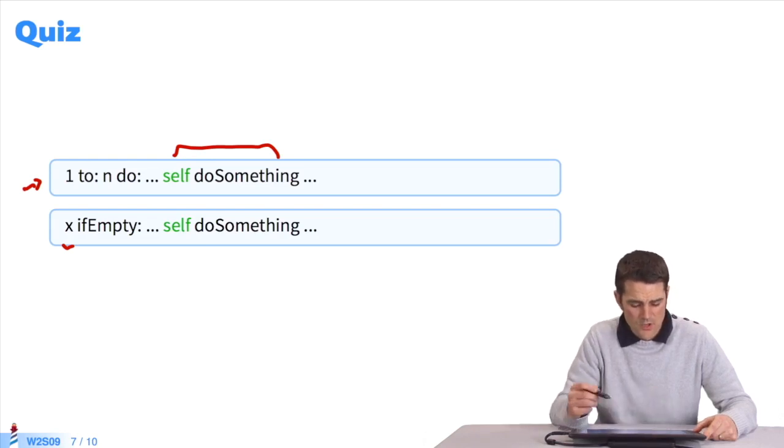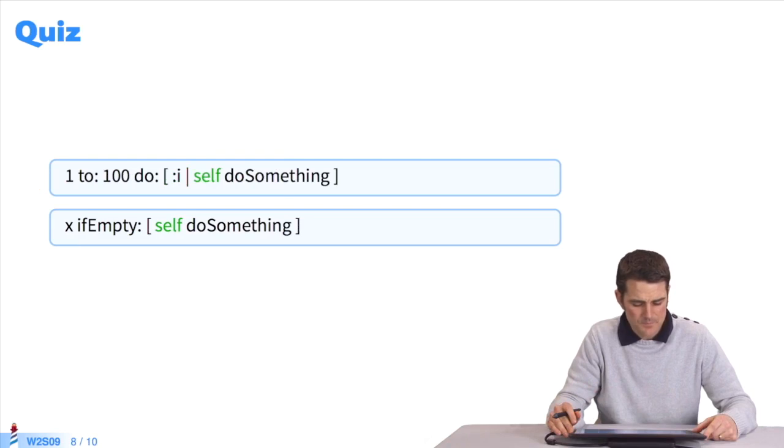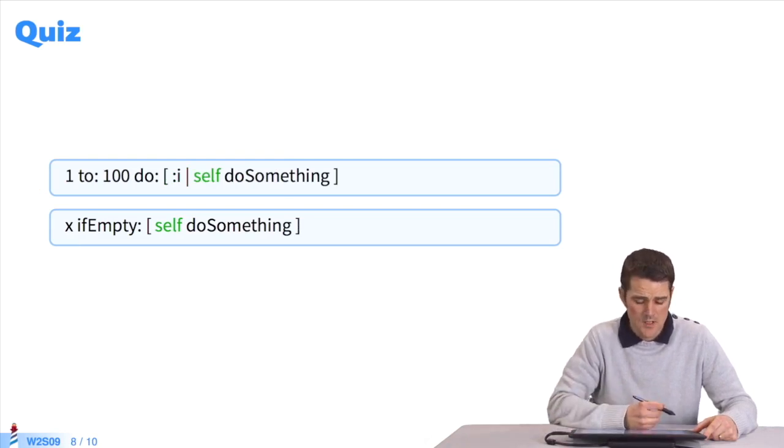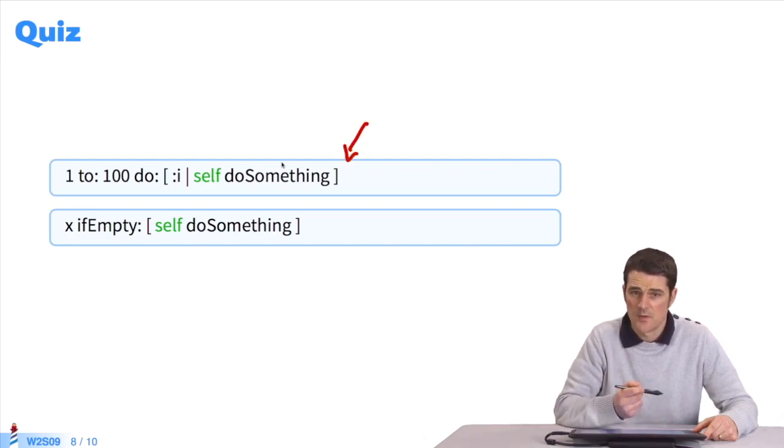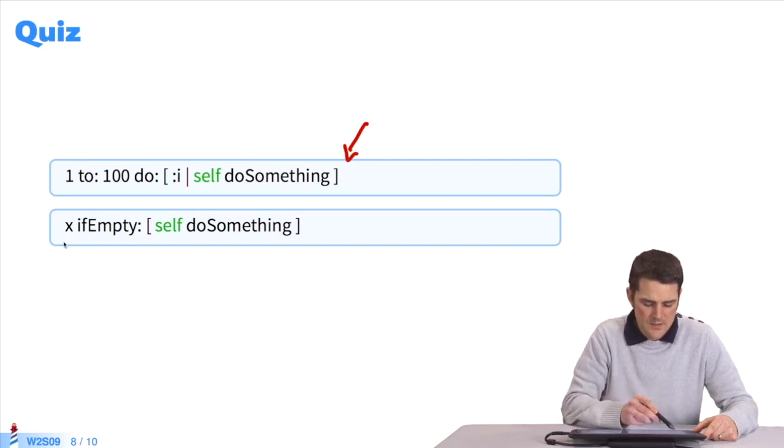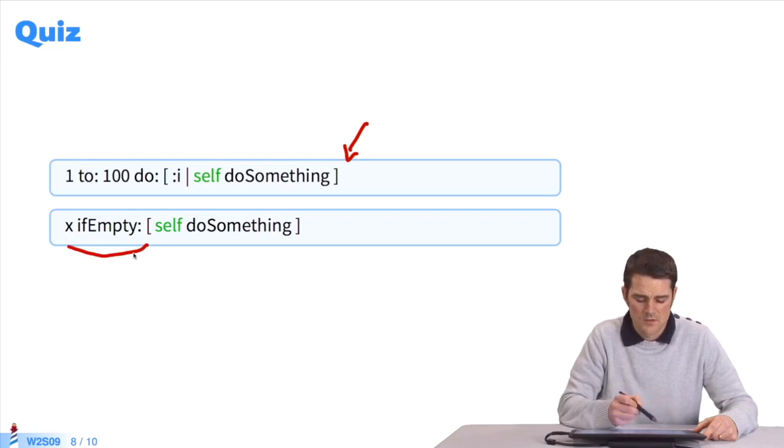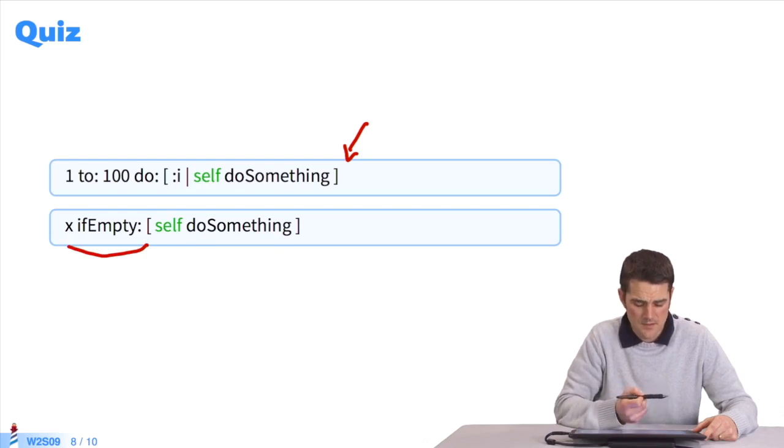I'll give you the answers. In both cases, you should use brackets. In the first case, if you want to repeat self do something, you have to send the message value to this block several times. In the second case, x if empty. If x isn't empty, you shouldn't execute self do something. If x is empty, you have to.